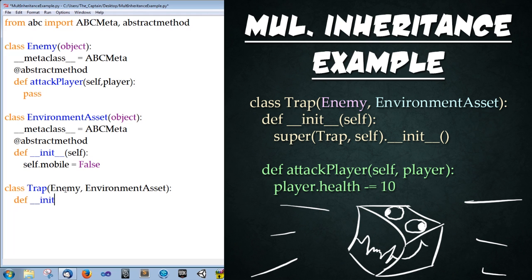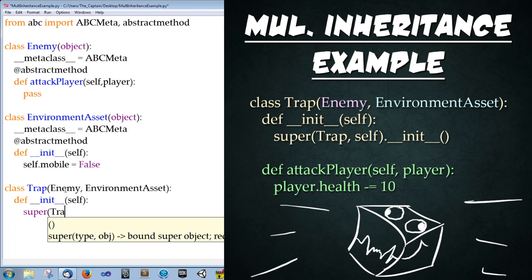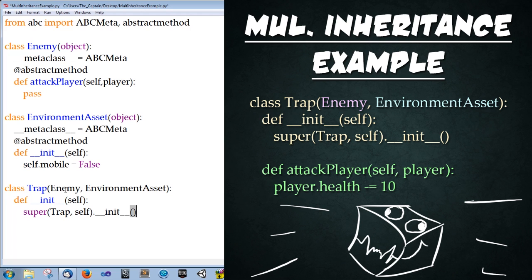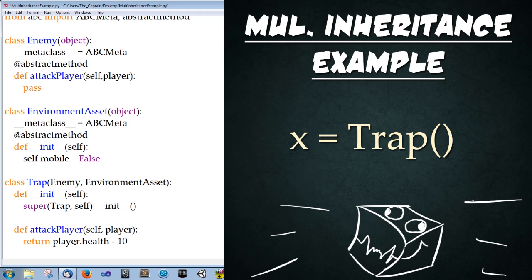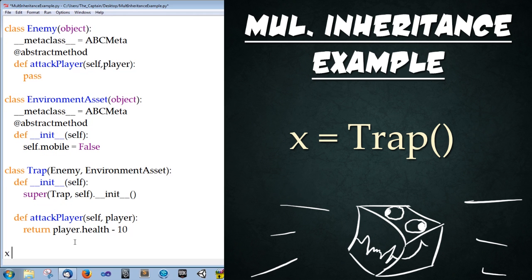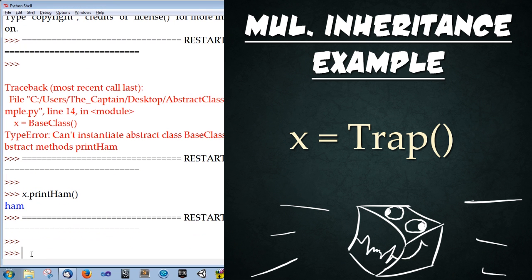Now we need to override the previous functions from the abstract classes. First the constructor: def __init__(self), colon, enter, then initialize both base classes using super: Trap, super(Trap, self).__init__(). Now let's overload the attack_player function: def attack_player(self, player), colon, enter, and type return player.health minus 10. That's it — this function just returns 10 less of the player's health. Finally, let's create an instance of Trap to make sure it's working: x equals Trap(). Save and press F5 to run. No errors — it compiled correctly. It worked.